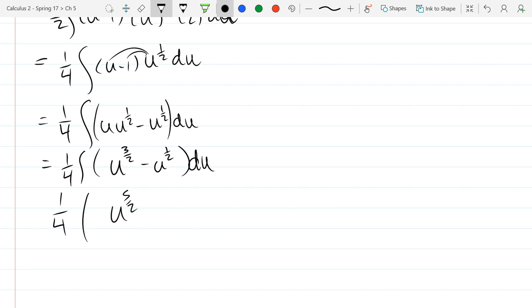And I'll bring that fourth down. Minus u to the 1 half, that's u to the 3 halves. But there's going to be coefficients missing. So if I take derivative, I get 3 halves u to the 1 half. So I have to multiply by 2 thirds. And this one I need to multiply by 2 fifths.